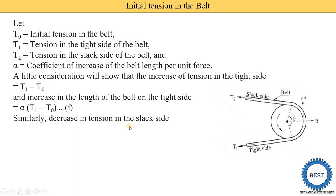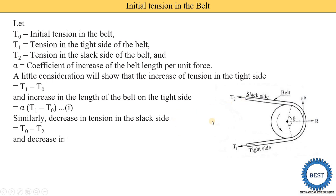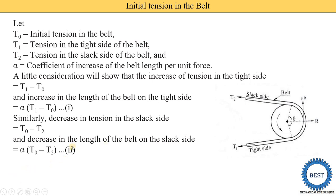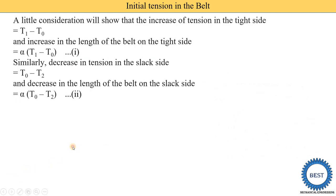Similarly, the decrease in tension on the slack side is T0 minus T2 — that is, initial tension minus tension in the slack side. The increase in the length of the belt on the slack side is alpha multiplied by (T0 − T2). This is Equation 2.